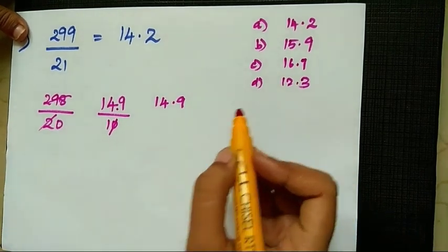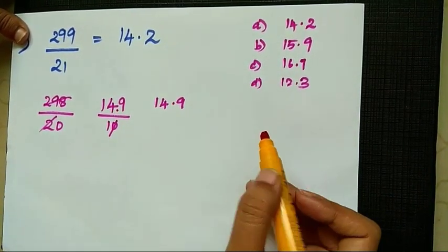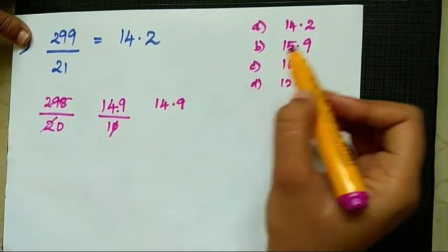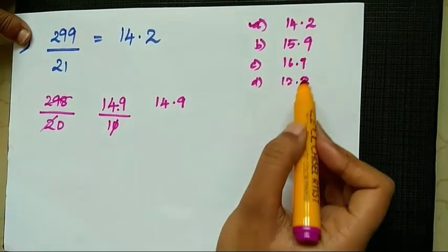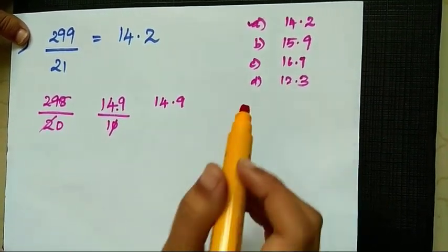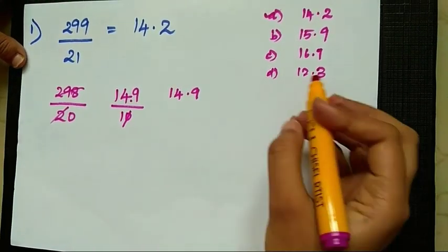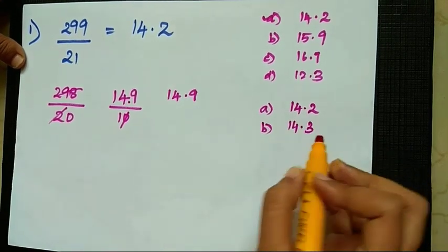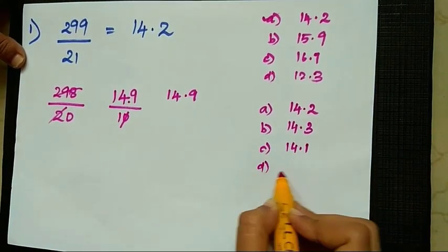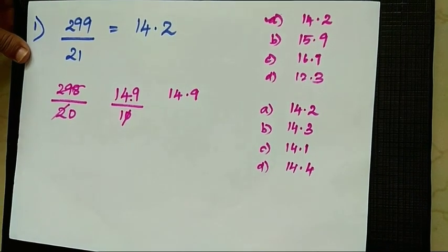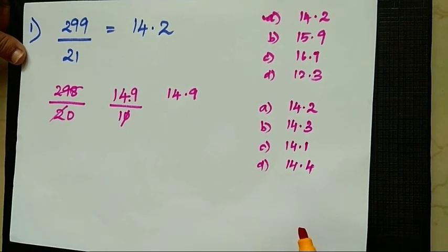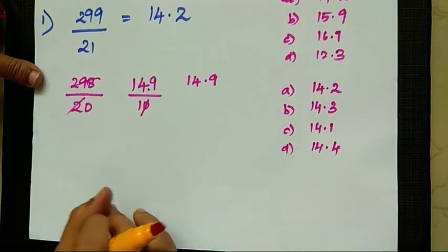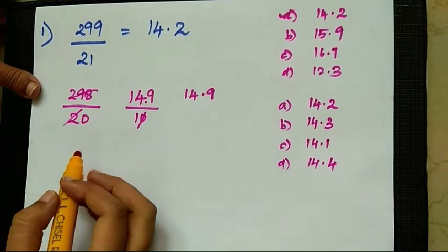Keep these options in mind. With approximation in limited time, the options here have a big difference, so 14.9 is easily closer to 14.2. The other options are far away. But suppose in the exam the options are very close: 14.2, 14.3, 14.1, 14.4 — all very close together.